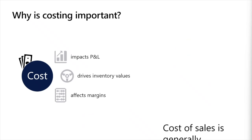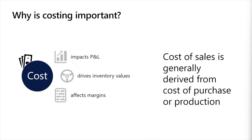The configurations we set up in the system determine how we track the cost to procure or produce inventory and how that cost is applied to sales. At the core, there are only two ways for a business to increase profits on existing products: reducing costs and increasing prices. Therefore, accurately capturing costs is critical to set appropriate prices and identify areas where costs can be reduced.